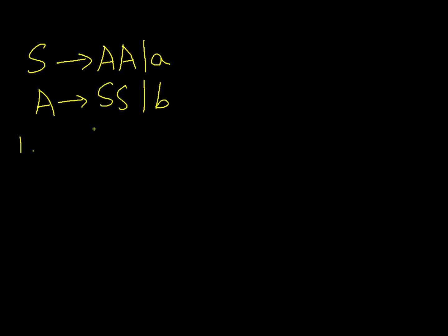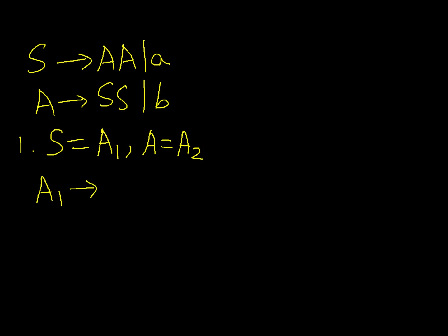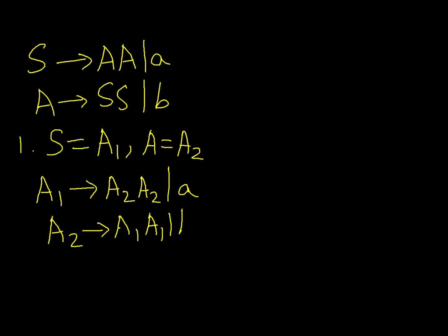Our first step is to rename S with A1 and rename A with A2. Writing the productions again: A1 produces A2 A2, as well as terminal a. And A2 produces A1 A1, as well as terminal b.